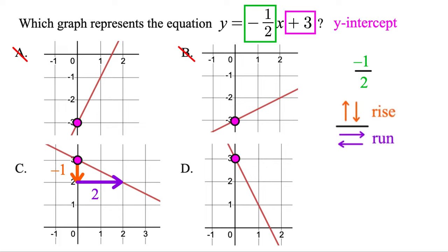Let's practice with D to confirm it's wrong. Going from this point to that point, it goes down one, two, over one. Stacking those gives negative two over one, which is the same as a slope of negative two. So the final answer is C.